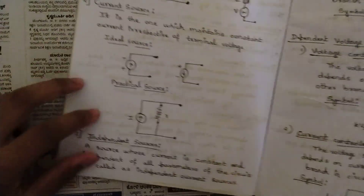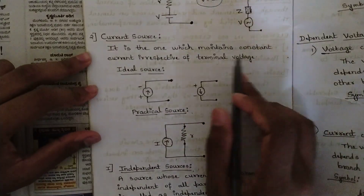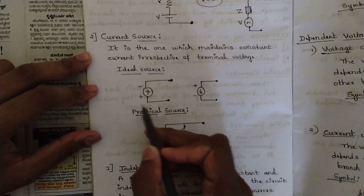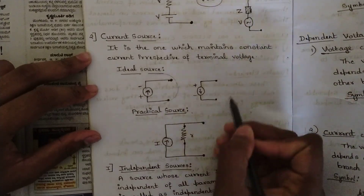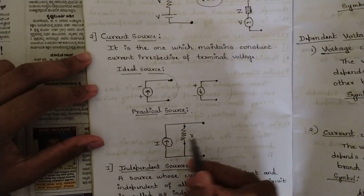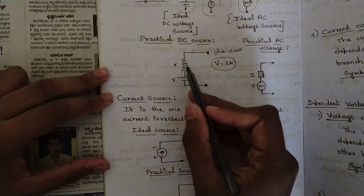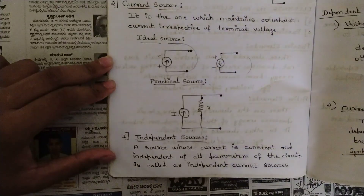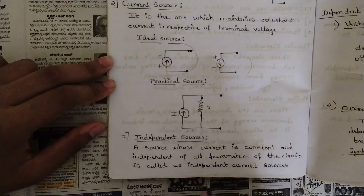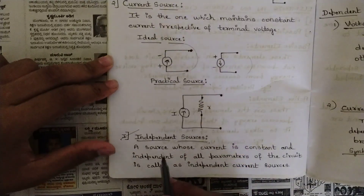A current source maintains constant current irrespective of terminal voltage. The ideal current source is represented with an arrow indicating direction. In a practical DC current source, the resistor is connected in parallel — unlike the voltage source where resistor and source are in series. In a current source, the components are connected through parallel branches, never in series.